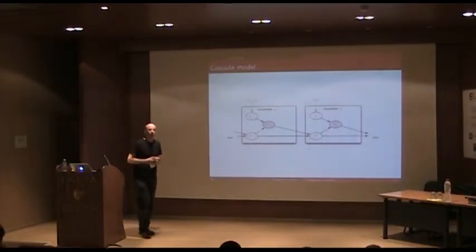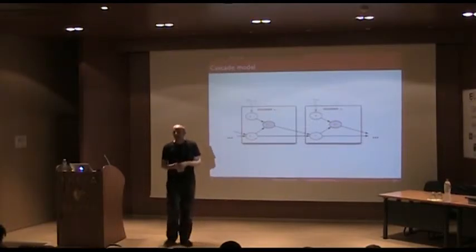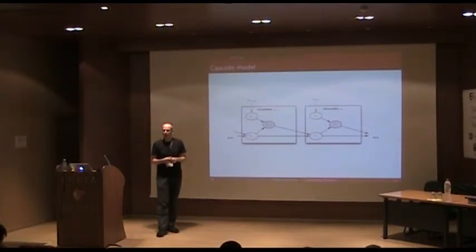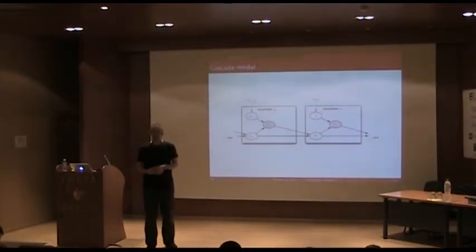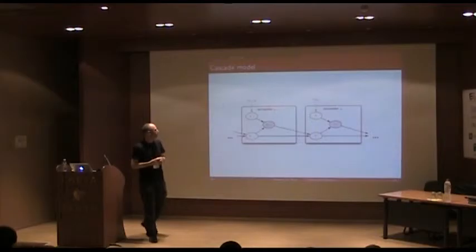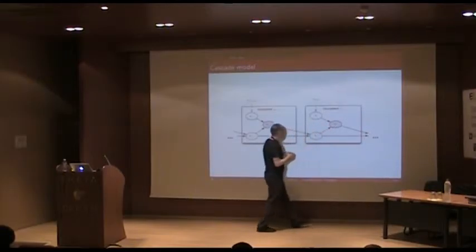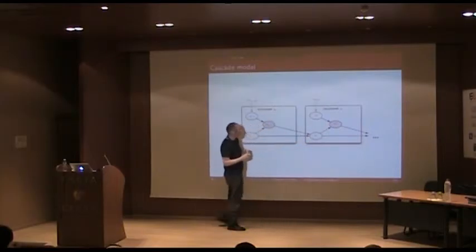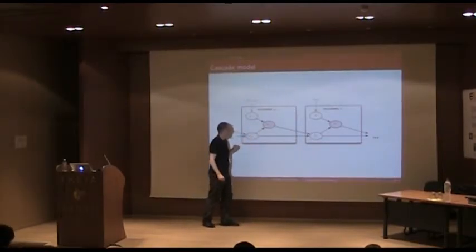And so that's a position-based click model that explains the probability of a document being clicked as a product of the document being examined and being attractive. Now, yet another model, the cascade model, tries to enrich this a tiny bit. Because how do we mostly read pages from top to bottom, mostly? Right, so what does this say? Well, again, we have clicks at rank r minus 1 and click at rank r. And here, the examination probability depends on what happened at rank r minus 1. Was there a click? And was there an examination?